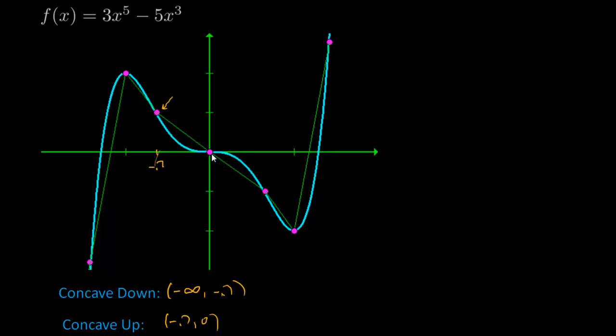Notice that after we are concave up, we now turn the concave down again. So from zero, this is point seven. So then it's concave down again. Oops, not to one. Messed that up. Sorry. Let me erase. Concave down from zero to point seven. And finally, we are then concave up again. We look like this parabola opening up from point seven to infinity.